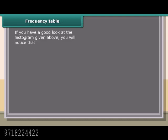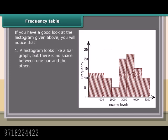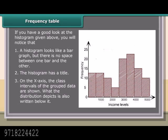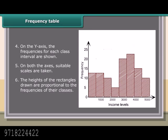If you have a good look at the histogram given above, you will notice that: 1. A histogram looks like a bar graph, but there is no space between one bar and the other. 2. The histogram has a title. 3. On the x-axis, the class intervals of the grouped data are shown. 4. On the y-axis, the frequencies for each class interval are shown. 5. On both the axes, suitable scales are taken. 6. The heights of the rectangles drawn are proportional to the frequencies of their classes.